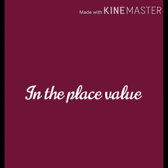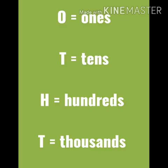Now children, in place value, O stands for ones — we will spell it as O-N-E-S, ones. T stands for tens — we will spell it as T-E-N-S, tens. H stands for hundreds — we will spell it as H-U-N-D-R-E-D-S, hundreds. And T stands for thousands — we will spell it as T-H-O-U-S-A-N-D-S, thousands.